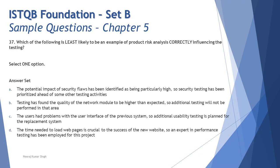Option D says the time needed to load web pages is crucial to the success of the new website, so an expert in performance testing has been employed for the project. Many people incorrectly choose D, thinking hiring is unrelated. However, if during requirement gathering you identify that performance parameters are crucial and you lack a performance expert, you would look to hire that person — because lacking the resource could lead to product failure. So this is also aligned.